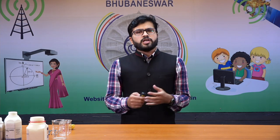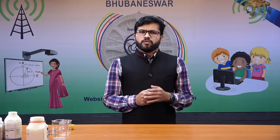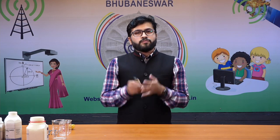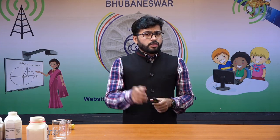We are all surrounded by many things, many matter around us, but are they the same? On your screen you can see a beaker containing water and a glass full of lemonade. Are both of them the same? Obviously no. Water is made up of water molecules, whereas lemonade is made up of water, sugar, salt, and lemon juice. So both are different because water is made up of only one kind of particle, whereas lemonade is made up of several types of components.